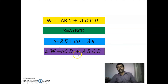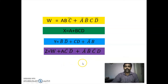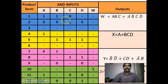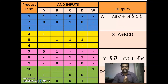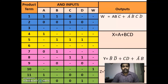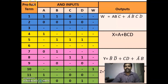Now we go for the PAL programming table. There is a slight difference between the PLA and PAL programming tables. In the PAL programming table, you write the product terms individually. W equals ABC-bar plus A-bar B-bar C D-bar. For A, put 1; for B, put 1; for C-bar, put 0; D is not present — put dash; W column gets a dash.